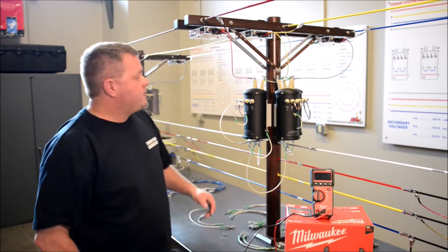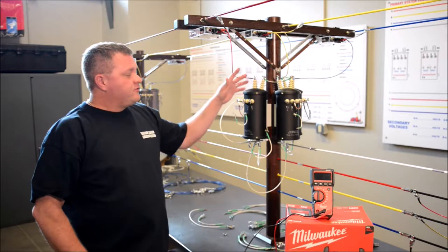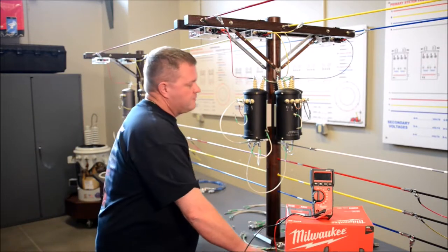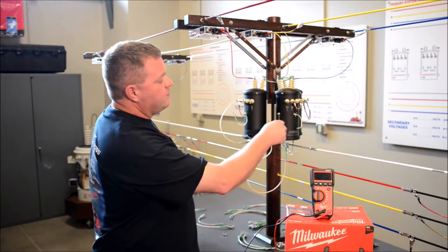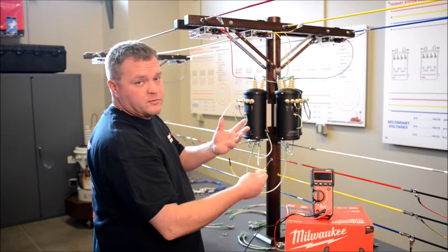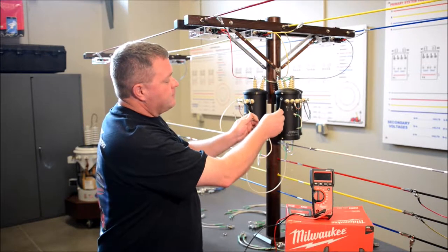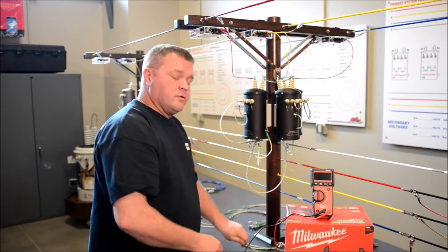So what we actually have here is a Y high side and a Delta low side. You'll notice this open point right here between this X1 and X4, or if it's a 3 bushing it'd be X1 to X3. But before we make this connection we need to test this.